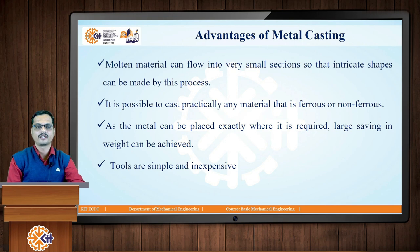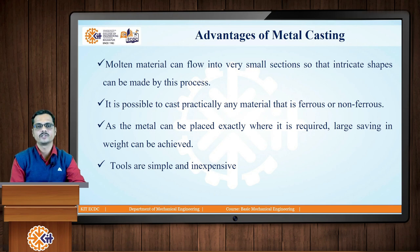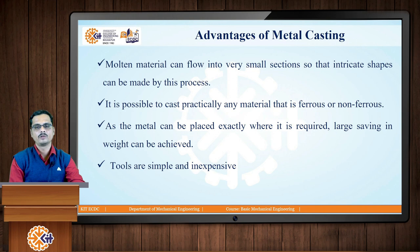Now, what are the advantages of metal casting? As it is the mother manufacturing process and the oldest near net shape manufacturing process, it has numerous advantages. Since we are pouring liquid molten metal into the mold cavity, the flowability of a liquid is greater than that of a solid. Therefore, very thin and small sections and intricate shapes can easily be produced by using casting.